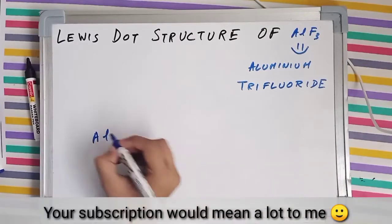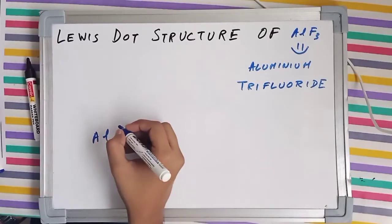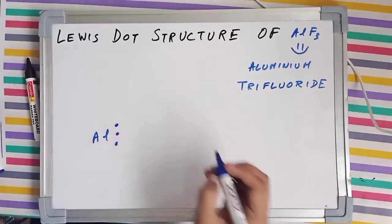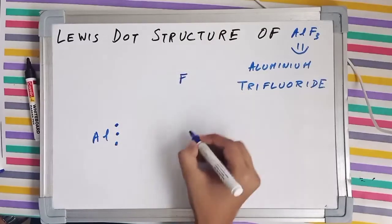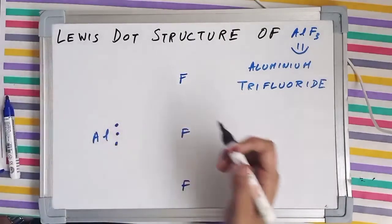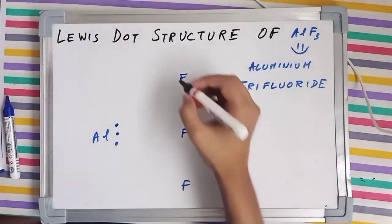So for understanding purposes I am going to draw aluminum like this and then show its valence electrons. It has got 3 valence electrons whereas I am going to show 3 fluorine atoms. Now fluorine has 7 valence electrons.